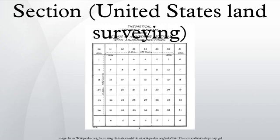Sections are customarily surveyed into smaller squares by repeated halving and quartering. A quarter section is 160 acres and a quarter quarter section is 40 acres.